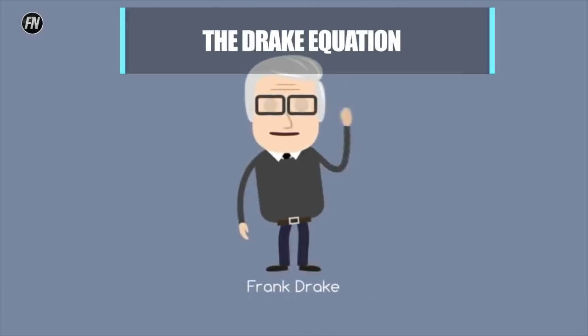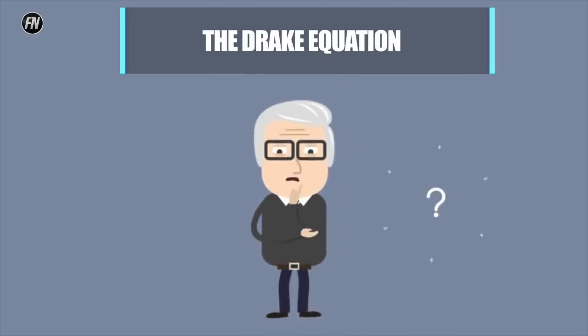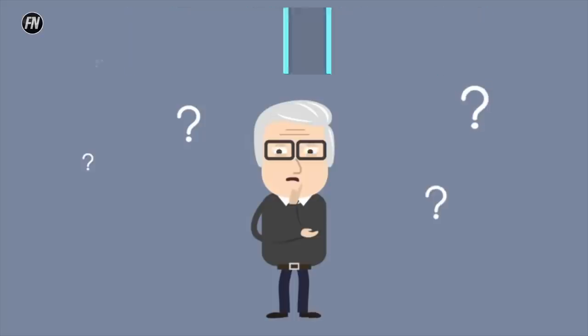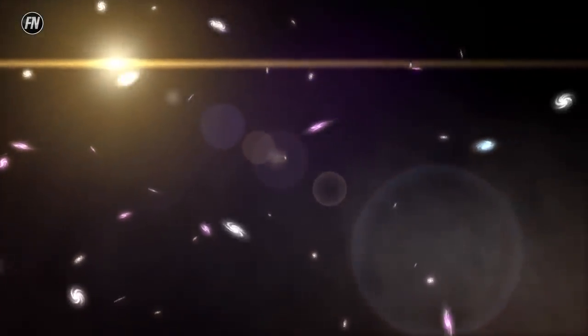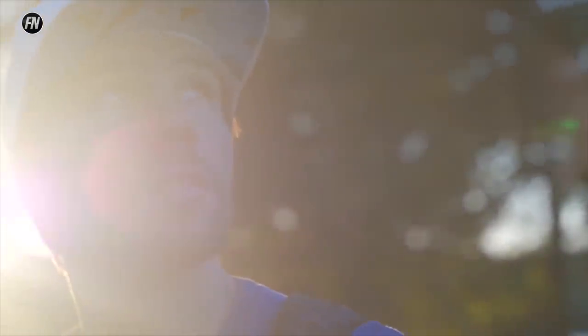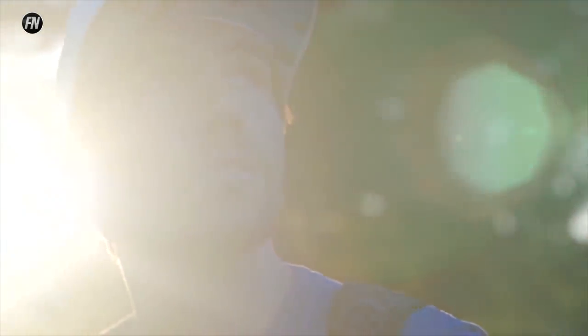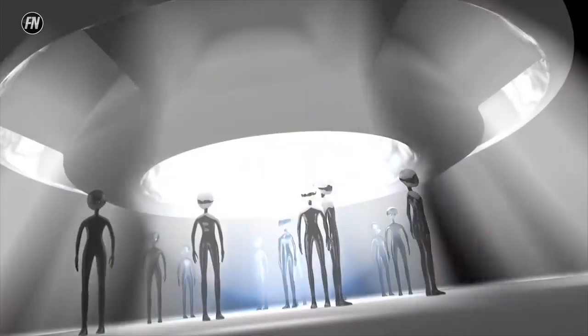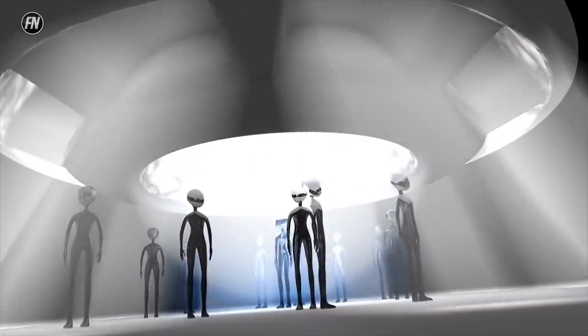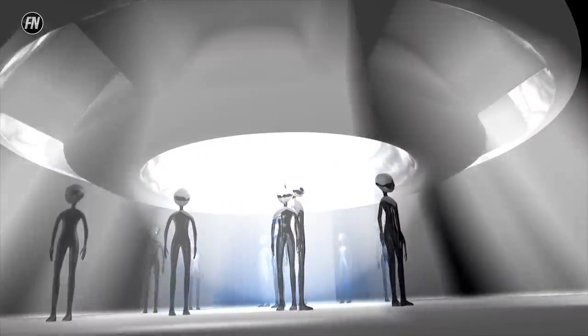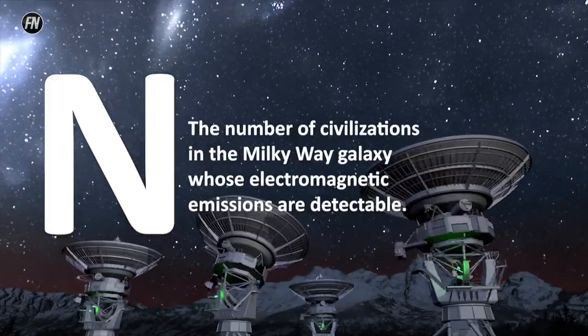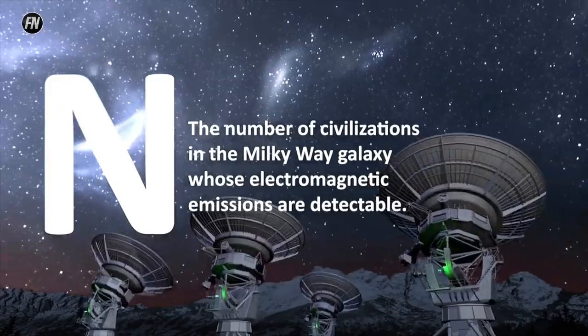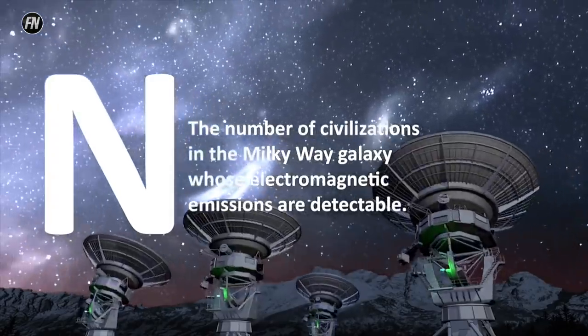The Drake Equation. Dr. Frank Drake put forward a simple equation in 1961 to not only quantify the potential number of civilizations in the universe, but also to stimulate scientific minds to start prioritizing the answer to the big question: are we alone in the universe? The equation is formed by simple variables that add up to give you the number of civilizations in the Milky Way galaxy who are advanced enough to produce detectable electromagnetic signals.